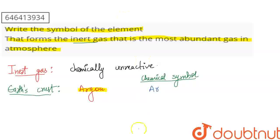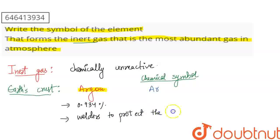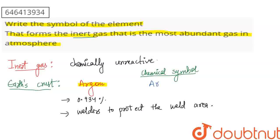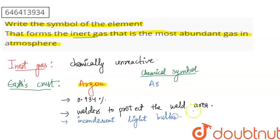The abundance of Argon in the atmosphere is around 0.934%. If I talk about some of the uses of it — it is used by welders to protect the weld area. It is also used in incandescent light bulbs. So, the chemical symbol for Argon is 'Ar'. Thank you.